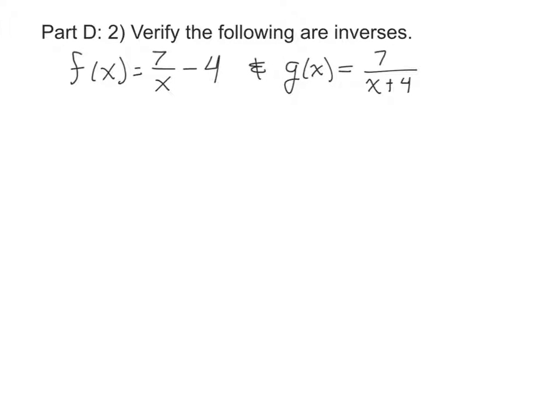There are three parts to verifying two functions are inverses. The first part is to look at f of g of x, which means within f of x, wherever there is an x, I'm going to replace it with g of x, the 7 over x plus 4.